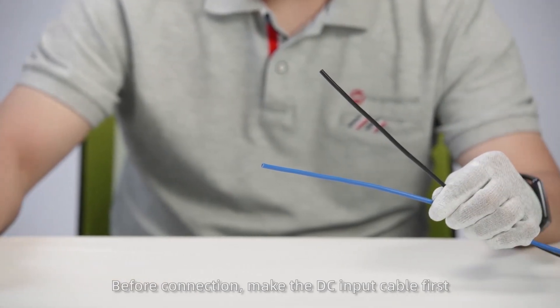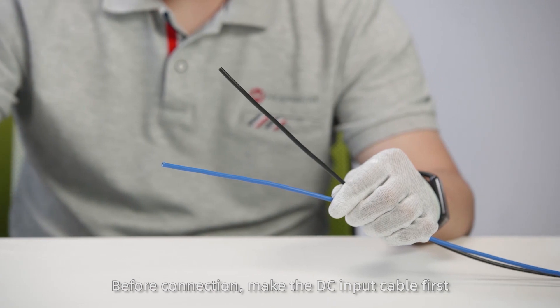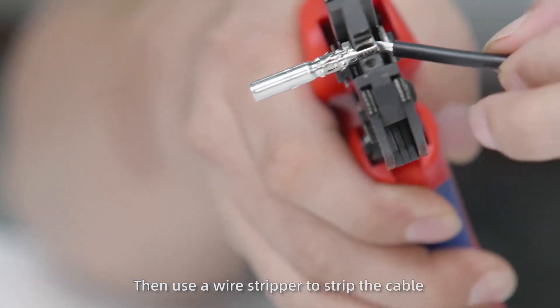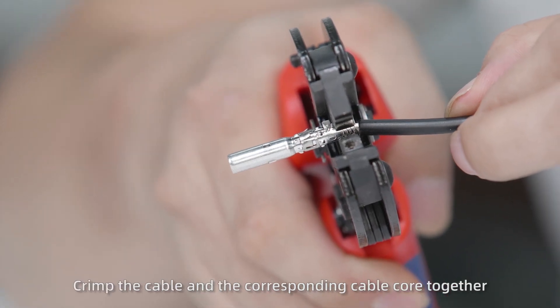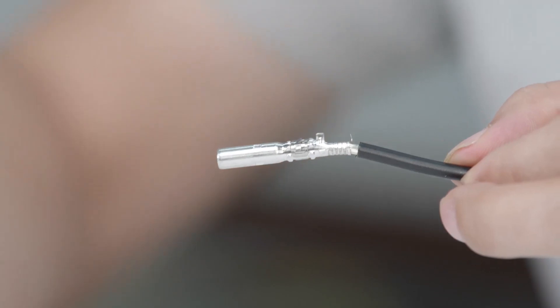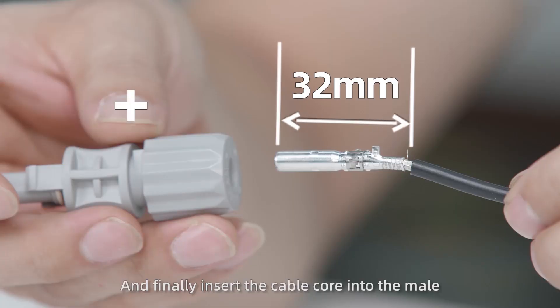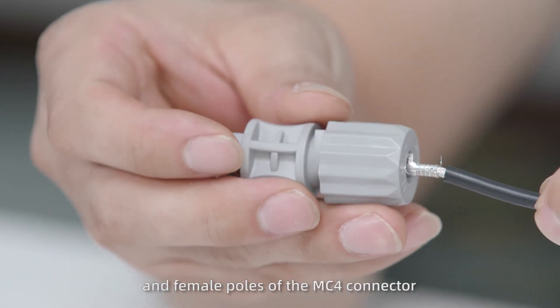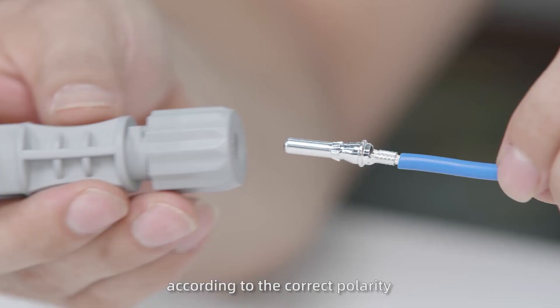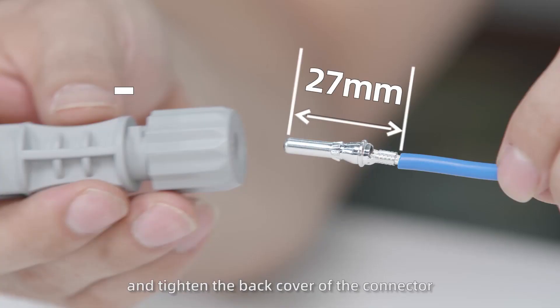Finally, connect cables on the DC side. Before connection, make the DC input cable first. Confirm the positive and negative poles of the input cable, then use a wire stripper to strip the cable. Crimp the cable and the corresponding cable core together, and finally insert the cable core into the male and female poles of the MC4 connector according to the correct polarity, and tighten the back cover of the connector.